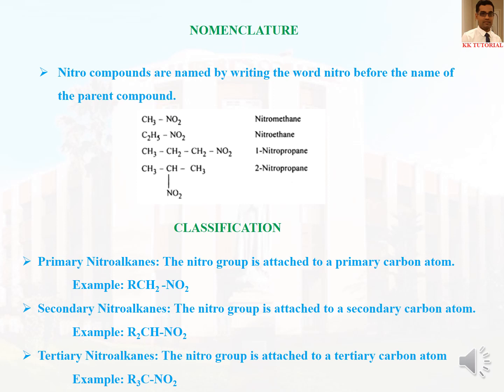For classification, nitroalkanes are classified based on the alkyl part attached to the nitro group. Primary nitroalkanes have the nitro group attached to a primary carbon atom, for example R-CH2-NO2. Secondary nitroalkanes have the nitro group attached to a secondary carbon atom. Tertiary nitroalkanes have the nitro group attached to a tertiary carbon atom. So nitroalkanes can be classified into primary, secondary, and tertiary nitroalkanes.